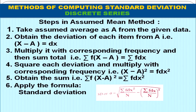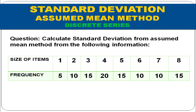Now let us discuss the assumed mean method for discrete series. The steps: first, find A from the data. Second, obtain deviations dx = x − A for each item. Third, multiply dx by corresponding frequency and sum to get Σfdx. Fourth, square dx to get dx², multiply by frequency and sum to get Σfdx². Then apply the formula: σ = √(Σfdx² / n − (Σfdx / n)²).